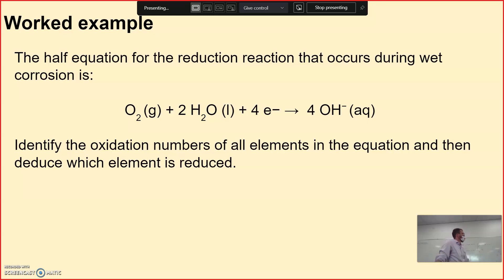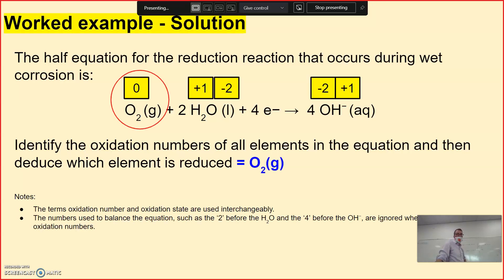So we've got this particular half equation. Let's consider the oxidation numbers of all the elements. In oxygen, what do you have? What's the oxidation number of oxygen in oxygen gas? Zero. Fantastic. Oxygen within water is minus two. The hydrogen in water is plus one. The hydrogen in hydroxide would be also plus one. So oxygen, in that case, is being reduced.